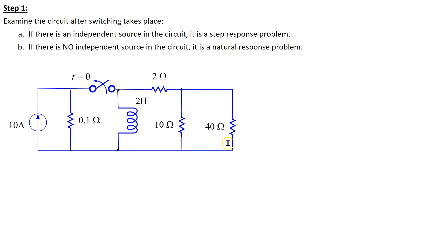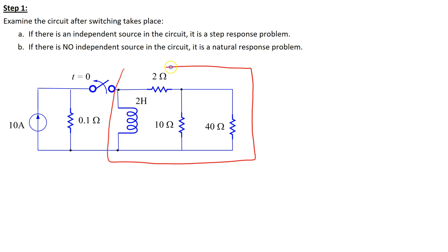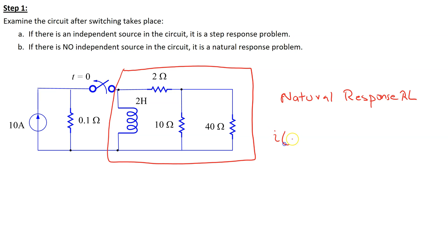For this given circuit, the switch is initially closed and it opens at time t equals 0. This means that this is the circuit of interest after switching takes place. We can see that after switching takes place, there is no independent source in this circuit. Therefore, we are solving for the natural response of an RL circuit.